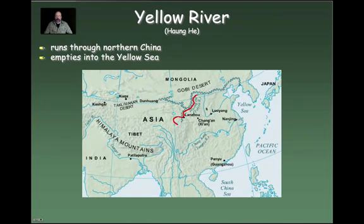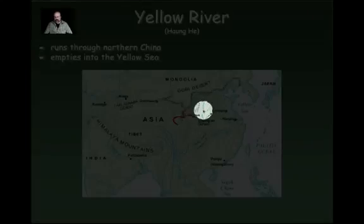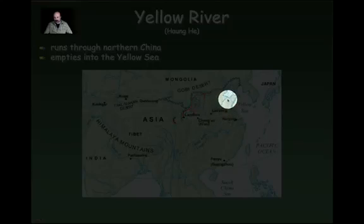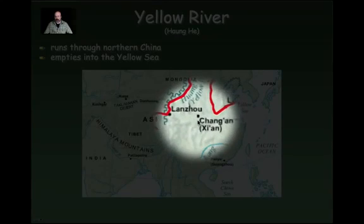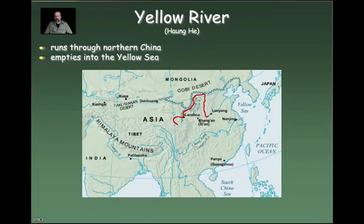Let's take a look at the Yellow River in China, also pronounced Huang He — Huang means yellow, He means river. It runs through northern China and empties into the Yellow Sea. Following the river, it has a pretty big bend in a couple of places before reaching the Yellow Sea. The area called Chang'an — known today as Xi'an — was the original ancient capital of China, located pretty close to the bend in the Yellow River.